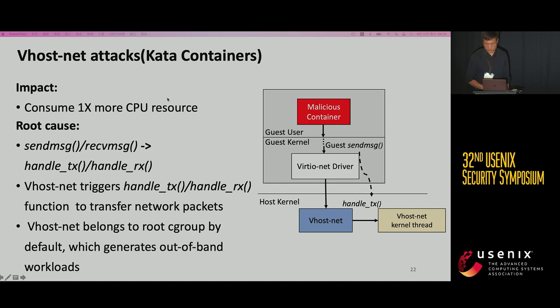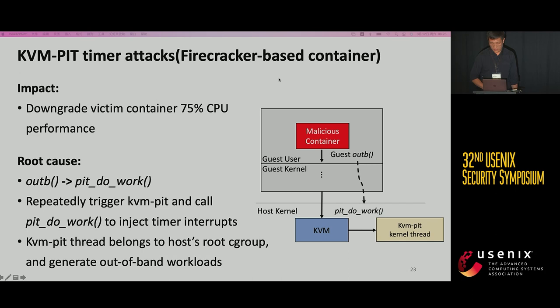The Kata container can exploit the vhost-net kernel module to generate out-of-band workloads. A malicious container's sendmsg and recvmsg syscalls are forwarded to vhost-net, a kernel module, triggering host kernel functions handle_tx and handle_rx. A vhost-net kernel thread is woken up to handle these requests and charged to the host root cgroup. By repeatedly triggering these paths, a malicious container can generate significant out-of-band workloads. The Firecracker-based container can also generate out-of-band workloads through the KVM module. Firecracker writes to low-level I/O ports and makes the KVM module wake up the kvm-pit kernel thread to handle the PIT do_work kernel function. By repeatedly triggering this path, the malicious container can generate much out-of-band workload and dramatically degrade the victim's CPU performance.